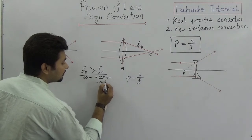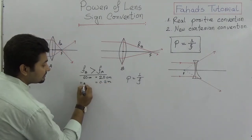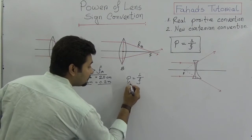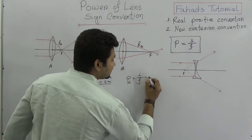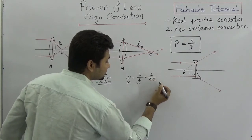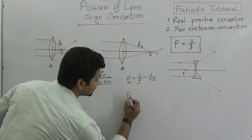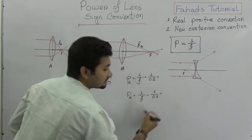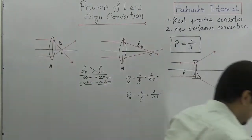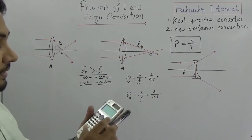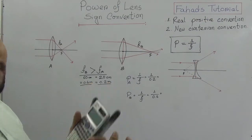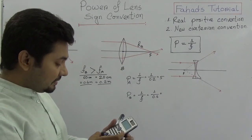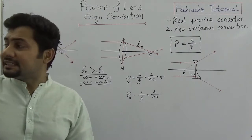If I want to find the power of lens A, we get P equals 1 divided by 0.2. For the power of lens B, we get 1 divided by 0.6. Using a calculator: 1 divided by 0.2 equals 5, and 1 divided by 0.6 equals approximately 1.67.